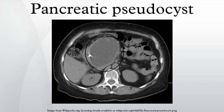Cyst jejunostomy: in this procedure a connection is created between the cyst and the small intestine so that the cyst fluid drains directly into the small intestine. Cyst duodenostomy: in this procedure a connection is created between the duodenum and the cyst to allow drainage of the cyst content into the duodenum. The type of surgical procedure depends on the location of the cyst; for pseudocysts that occur in the head of the pancreas, a cyst duodenostomy is usually performed.